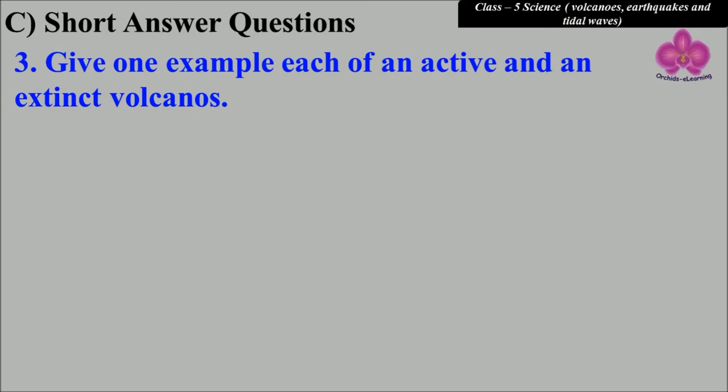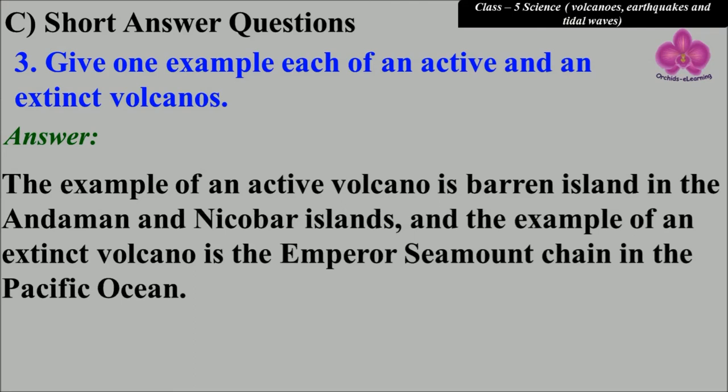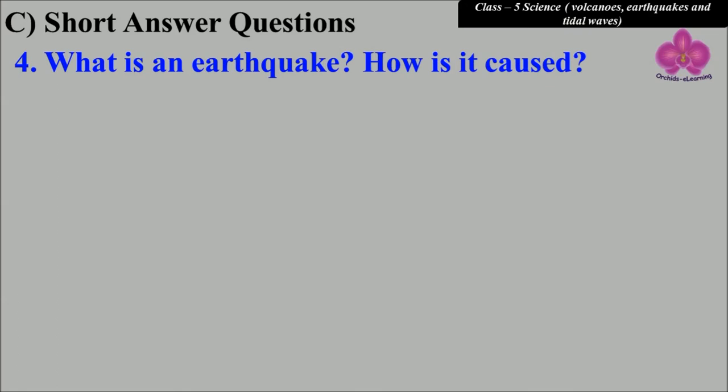an extinct volcano. Answer: The example of an active volcano is Barren Island in the Andaman and Nicobar Islands, and the example of an extinct volcano is the Emperor Seamount Chain in the Pacific Ocean. Question number four: What